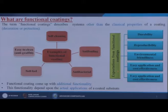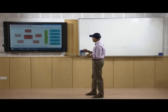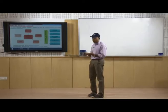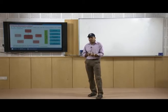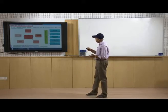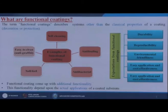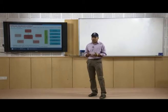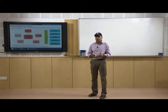What are the expectations from functional coatings — why are we doing this kind of coating? The five main properties are: durability, reproducibility, environmental friendliness, easy application, and cost effectiveness. These are the five main properties for which we are doing functional coatings.